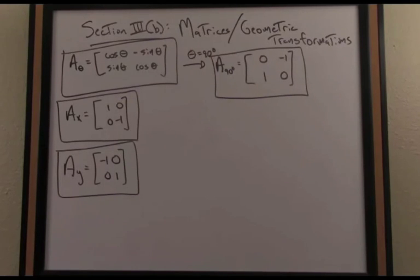and end up with a single matrix that, once again, compactly represents that sequence of geometric transformations. Let's see how that works with an example.